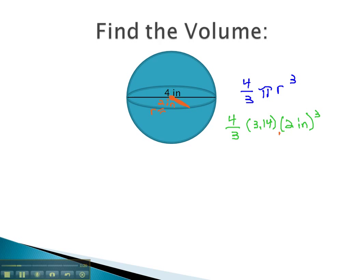Using order of operations to simplify, we'll do the exponent of 2 inches cubed first. We now have 4 thirds times 3.14 times 2 cubed is 8, and then we cube the inches as well.